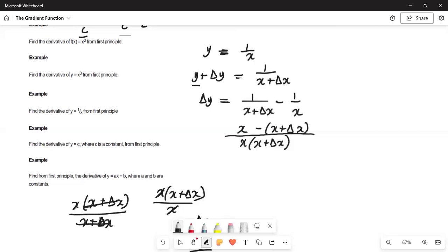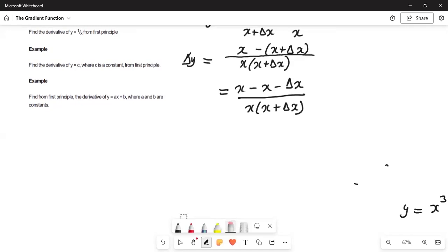That is exactly what I'm doing here. So this will be minus x plus delta x. So delta y is equal to that. Now let's open up these brackets. So this will be x minus x minus x over x times x plus delta x. Now x minus x is 0, which means delta y is equal to negative delta x over x times x plus delta x.